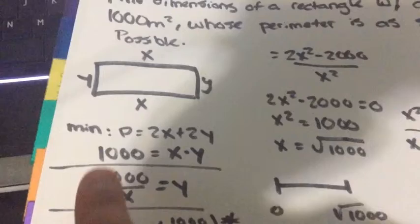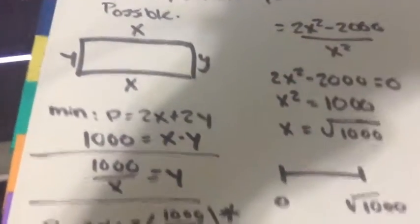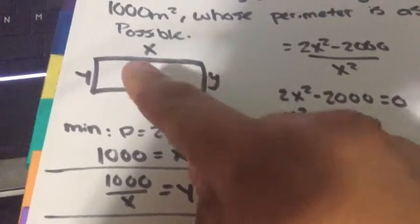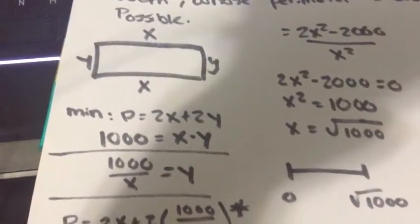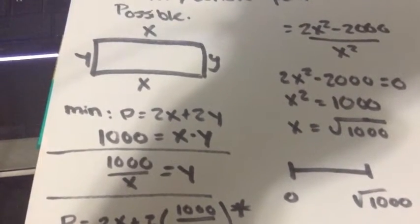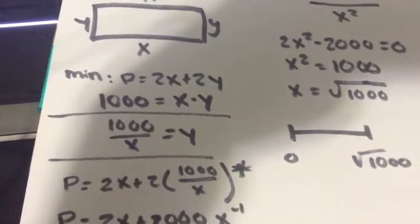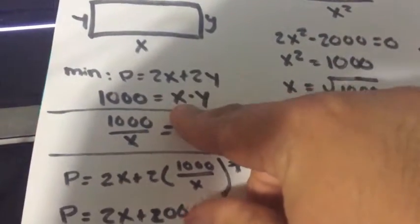So you're trying to minimize, so the perimeter will be 2x plus 2y. And that's what you're trying to minimize in this case. So eventually you will have to take a derivative of this. And so this will be your constraint.